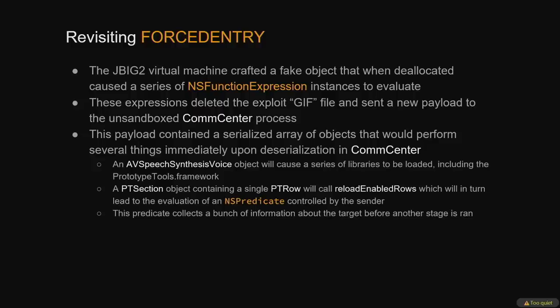That crazy JBIG2 VM made a fake object in memory that when deallocated, evaluated a series of NSFunction expressions. These expressions cleaned up after the initial exploit by deleting the fake GIF file, and they crafted another payload — an array of objects sent to the unsandboxed CommCenter process. These objects were chosen such that when the target deserialized them, they would immediately evaluate a new NSPredicate which collected device information before downloading and evaluating another NSPredicate payload.